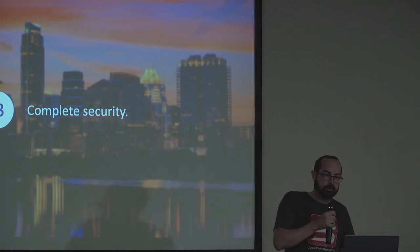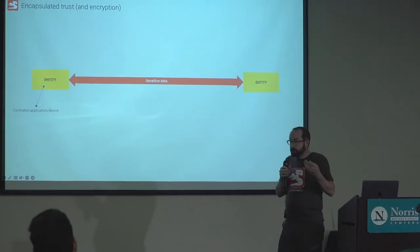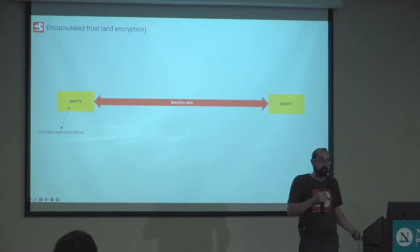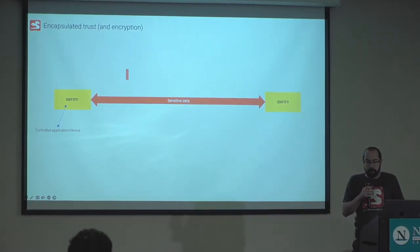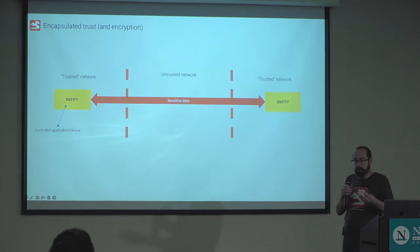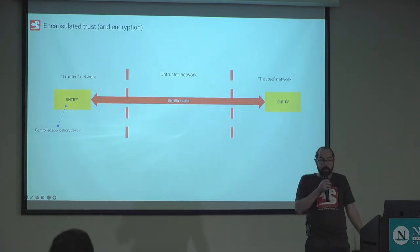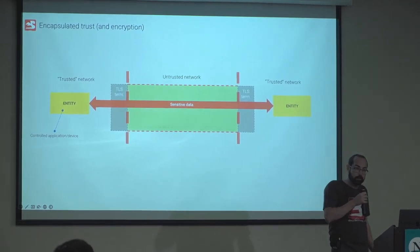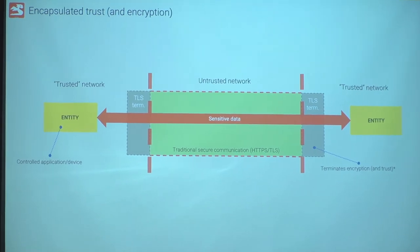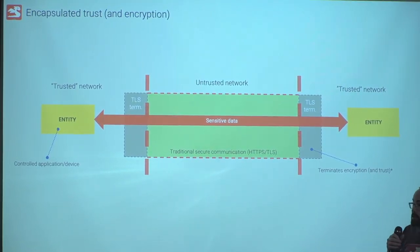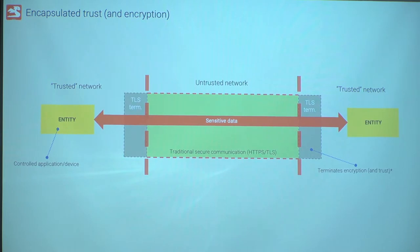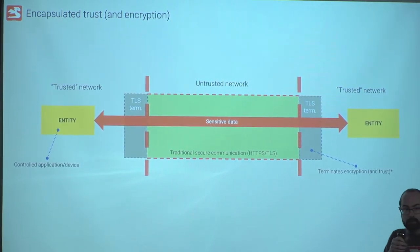What are we trying to achieve? Take a common scenario: two entities — devices, applications, users — want to send sensitive data across an untrusted network, usually the internet. You put TLS terminators on either end, set up a TLS tunnel over HTTPS, which handles encryption and the handshake. But the problem is the gap between the TLS terminator and your application. That could be a problem depending on how much you trust your network, your cloud provider, or whoever is hosting your environment.